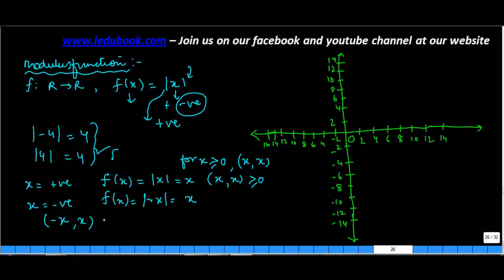For all values less than 0. So hence we conclude that the function for a modulus function is (x, x) for x greater than or equal to 0 and (-x, x) for x less than 0.